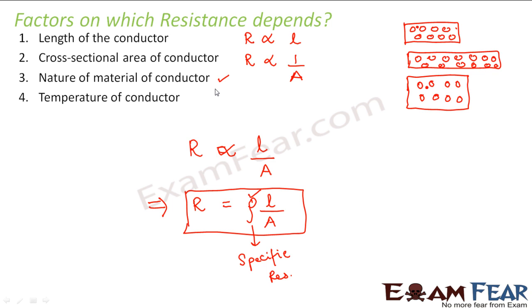You might ask how the dependence of resistance on temperature is taken into account in this formula. The dependence on temperature is not exactly captured here; however, it has been observed experimentally that in the case of metals, insulators, or semiconductors, the resistance changes with change in temperature. You will study about the dependence of resistance on temperature in your higher classes, as it involves other concepts — we will talk about that in class 12. For now, you should know this is how we express resistance and these are the factors on which it depends.